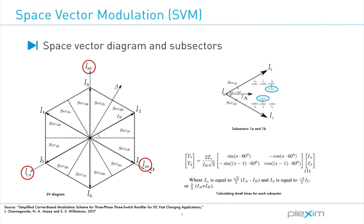Once the sector is identified, that information is used to compute the dwell times for that particular sector, using current-second balance involving trigonometric functions, as shown in the bottom right of this slide.